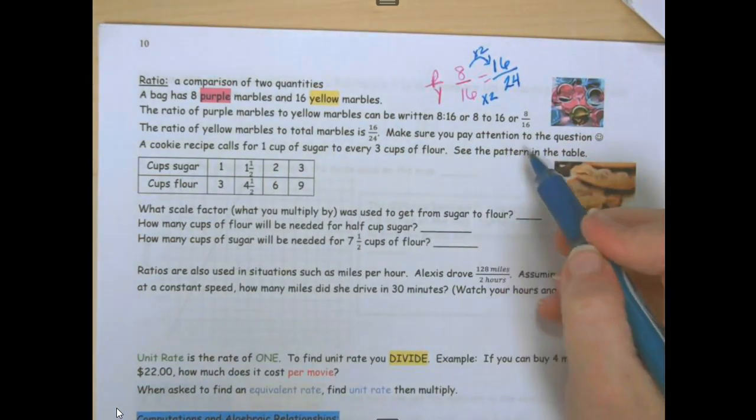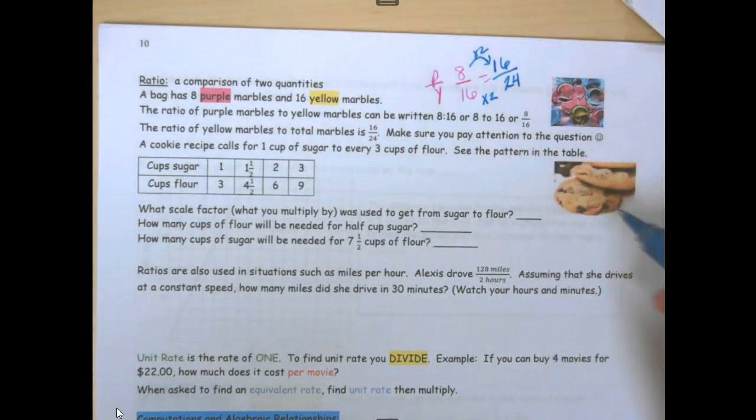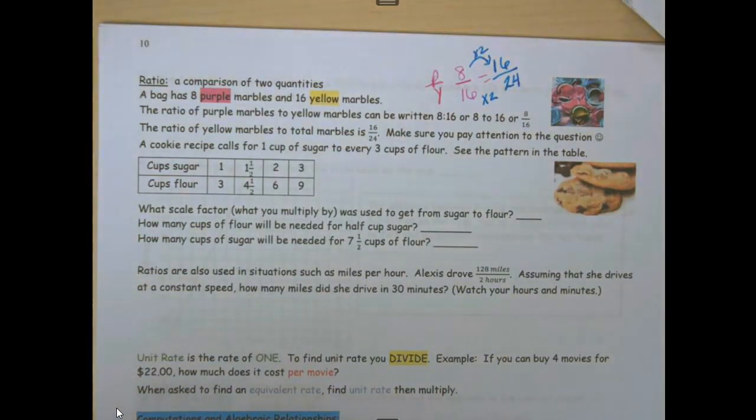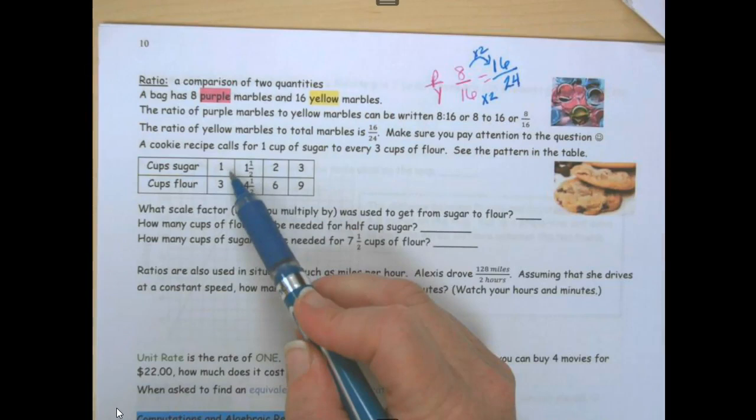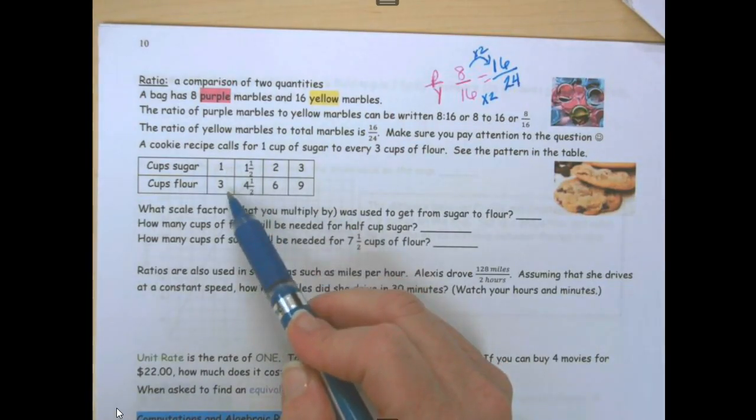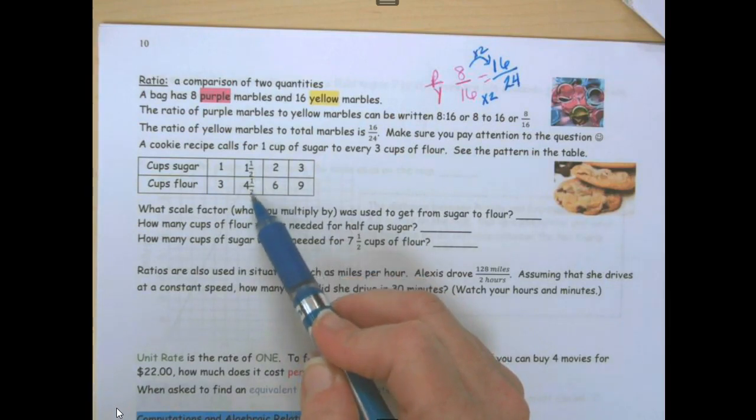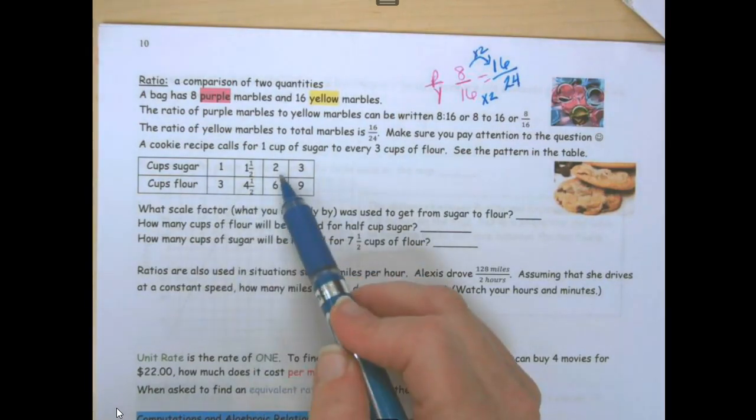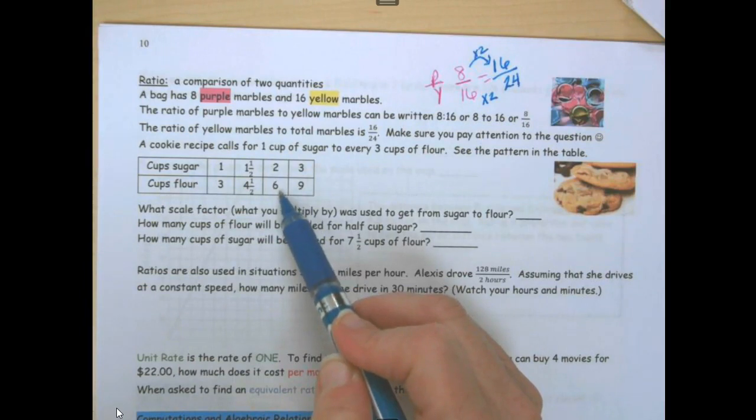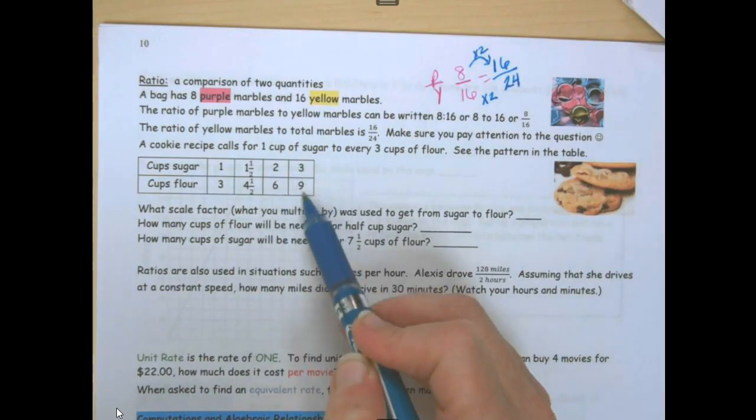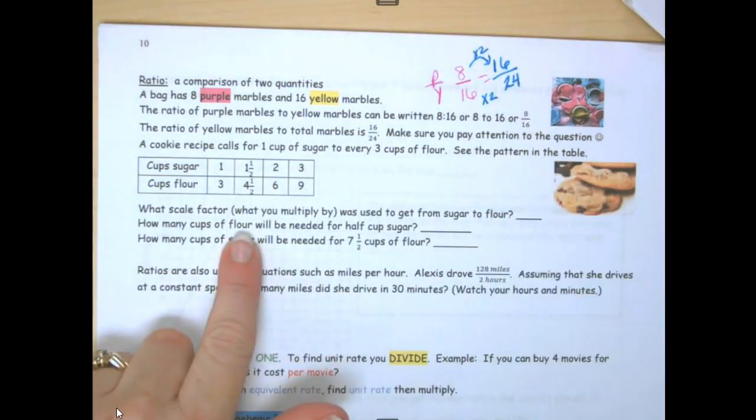Make sure you're paying attention to the question because the order does matter. A cookie recipe calls for 1 cup of sugar to every 3 cups of flour. See the pattern in the table. 1 cup sugar, 3 cups flour. 1.5 cups sugar, 4.5 cups flour. 2 cups sugar, 6 cups flour. 3 cups sugar, 9 cups flour. What is the scale factor?